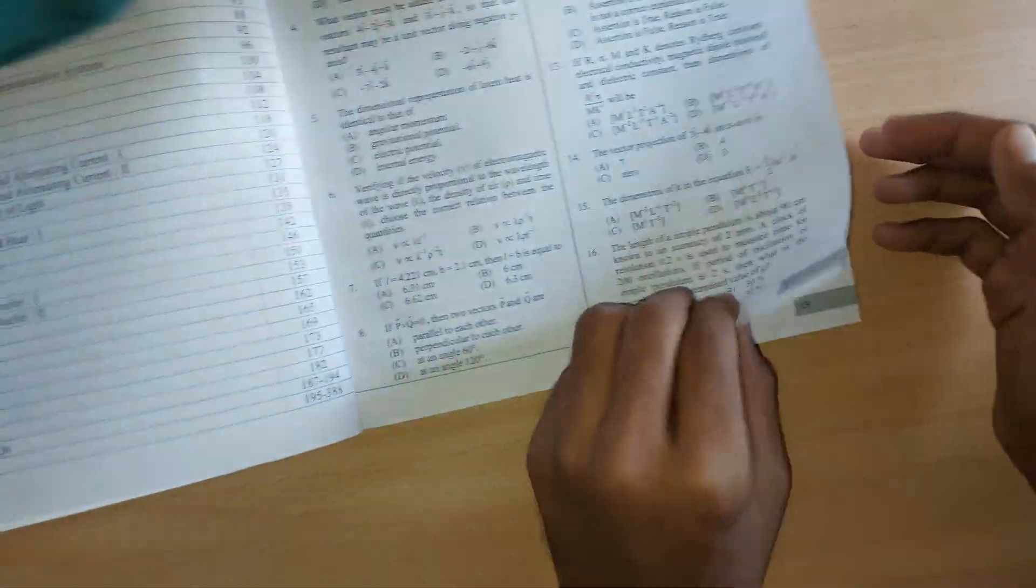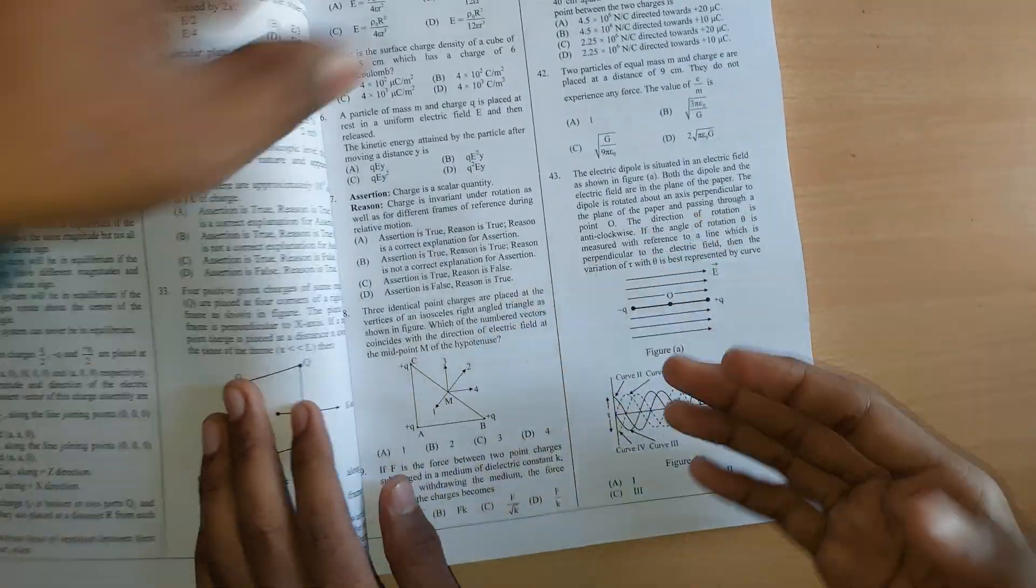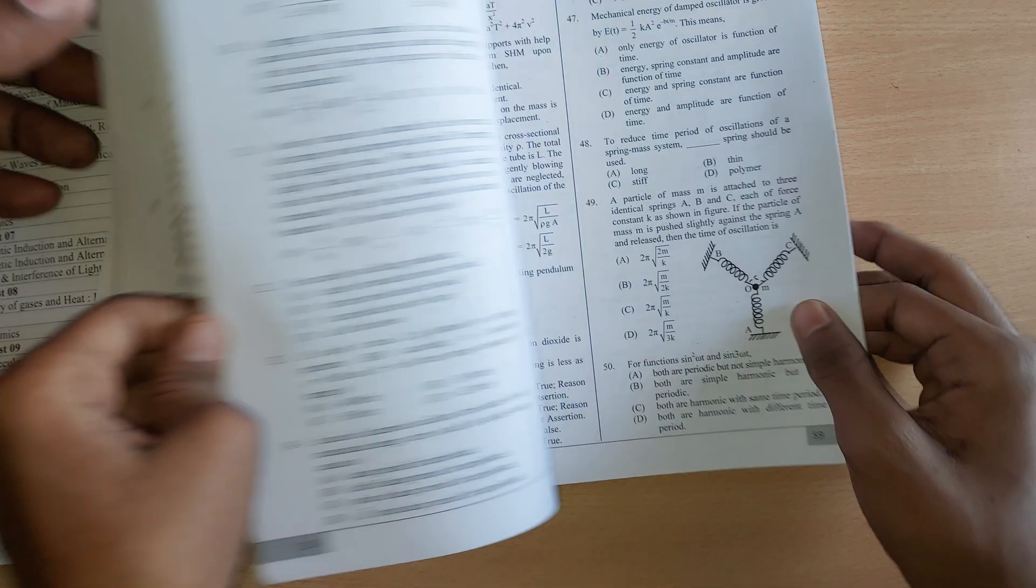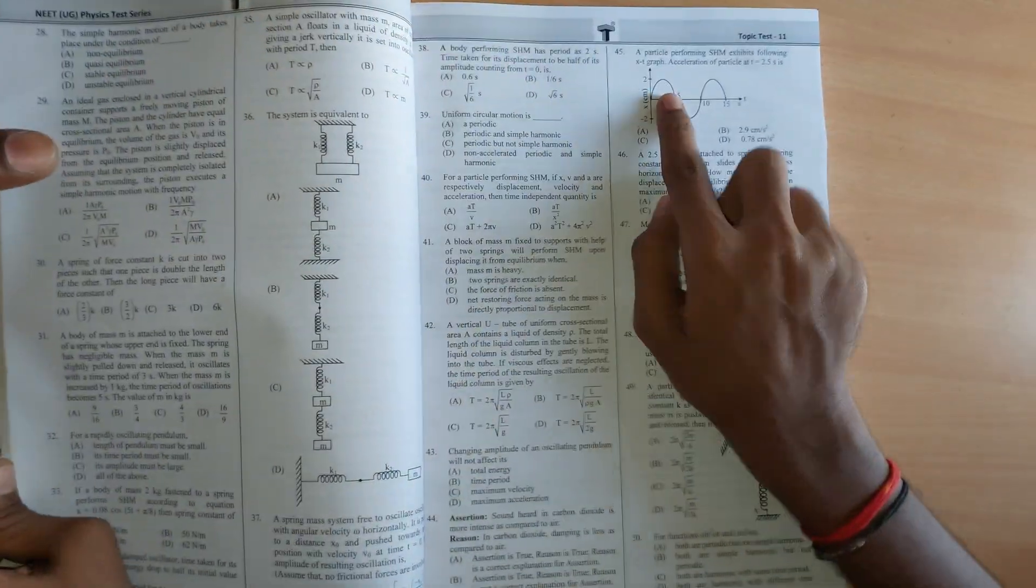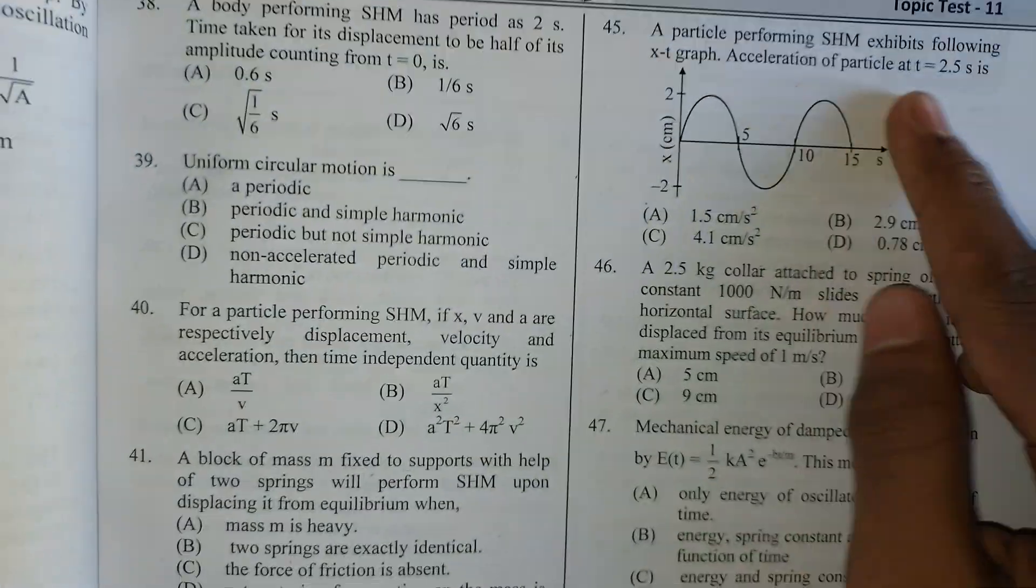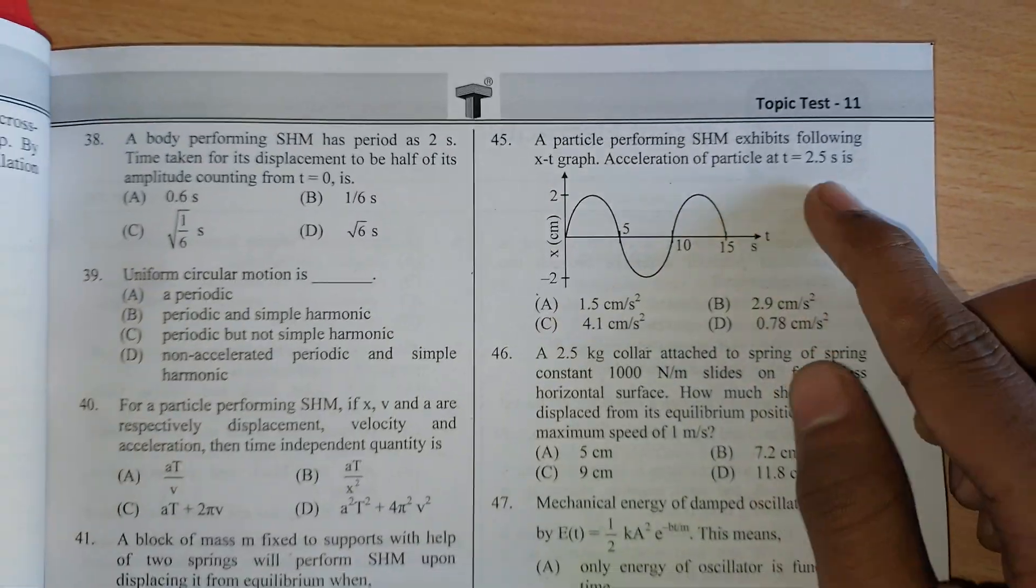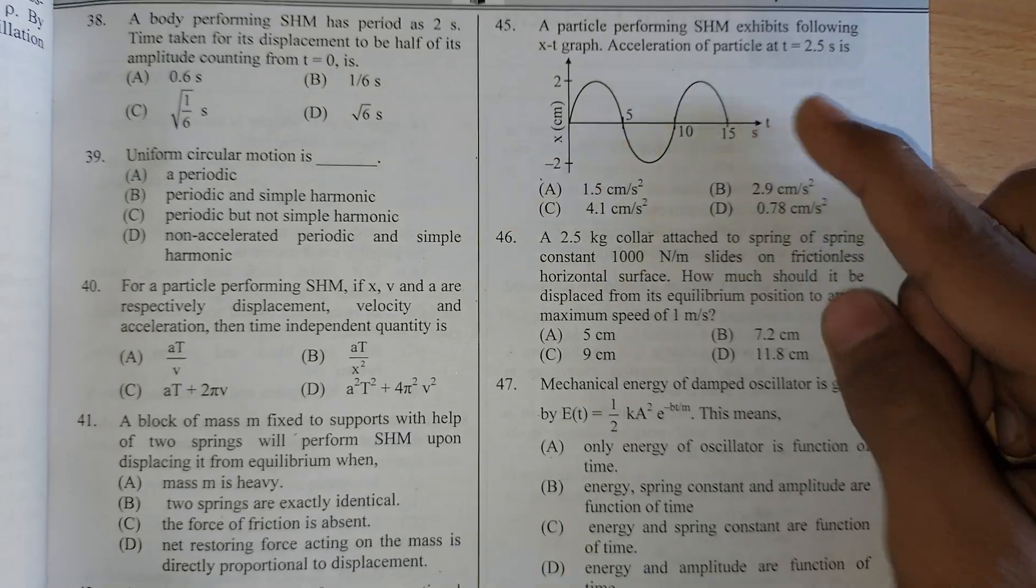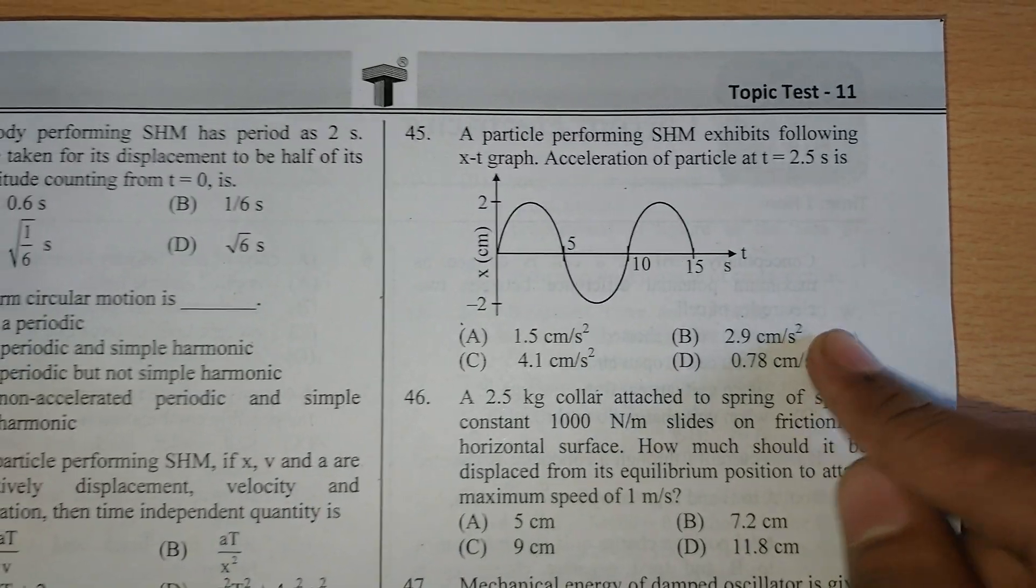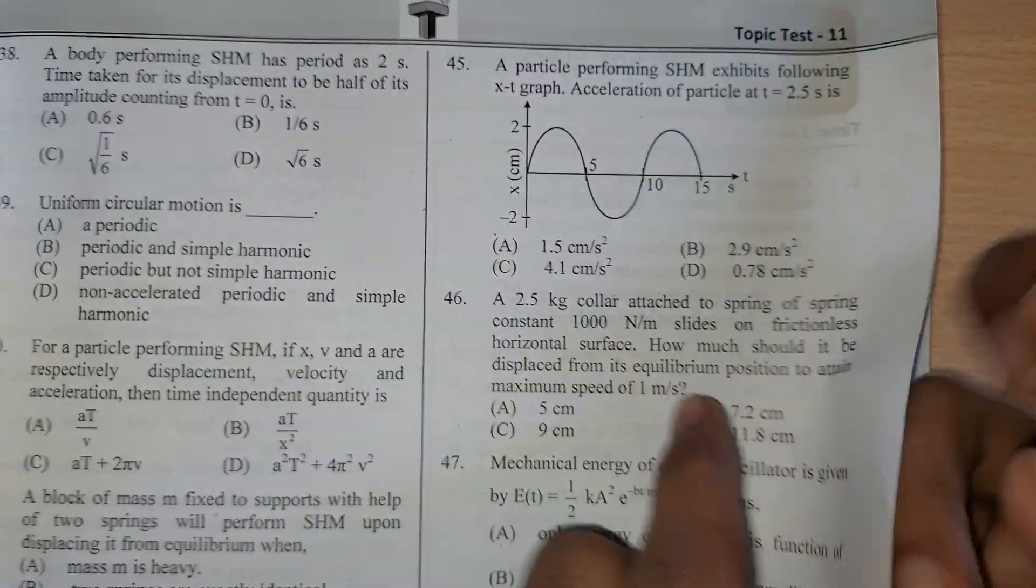Let's see how questions are going to be explained in this. Let's go to the topic test. A particle performing SHM exhibits XT acceleration at t equal to 2.5. It's given a graph and we have to find an answer for it. Same type of question we have got in NEET 2022. So it is repeated here, so it is a trustable book.